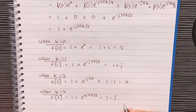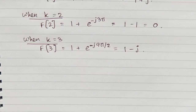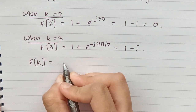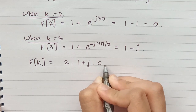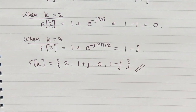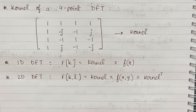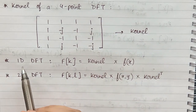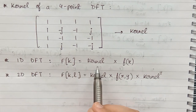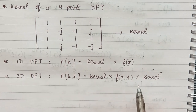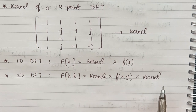So we write 1 − j. Our final answer is: F(k) = {2, 1+j, 0, 1−j}. Now, usually in your exams you will get questions such as apply DFT on an image. For that you need the kernel of DFT — specifically the kernel of a 4-point DFT. For a 1D image, F(k) = kernel × f(x). For 2D, F(k,l) = kernel × f(x,y) × kernel^T.